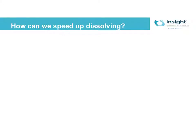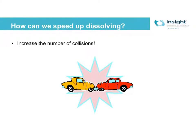Using this idea of collision theory, there are many ways that we can speed up dissolving. Ultimately, whatever we do, we have to increase the number of collisions. If we increase the collisions, dissolving will happen faster, because the solute and solvent molecules have to collide for dissolving to occur.